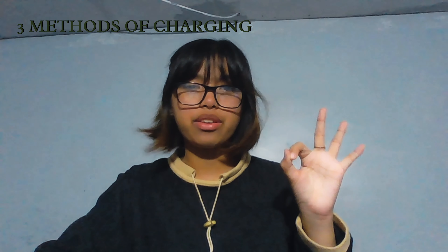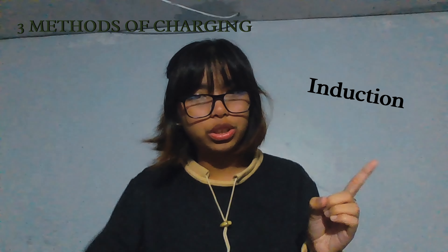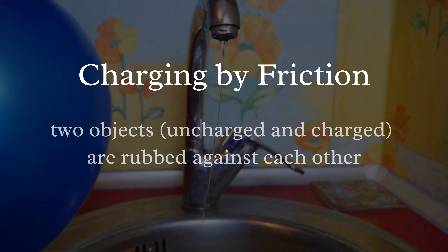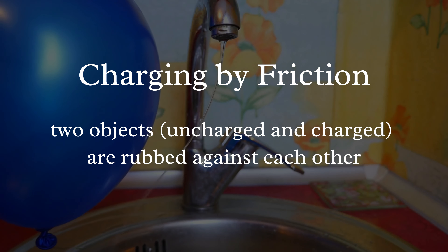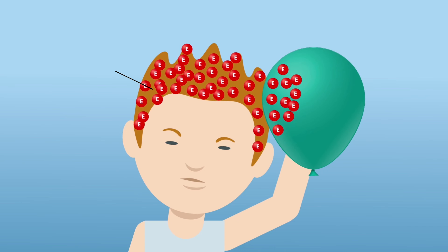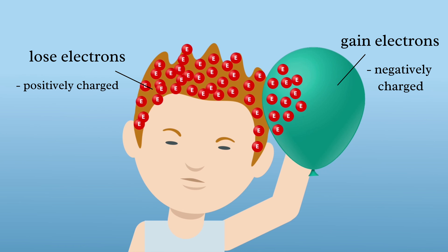There are three methods of charging: charging by friction, charging by conduction, and charging by induction. First is charging by friction. It is when two objects are rubbed against each other — transfer of charge occurs, and one object loses electrons while the other gains electrons. Objects losing electrons become positively charged, and objects gaining electrons become negatively charged.